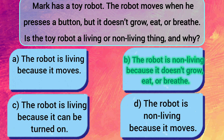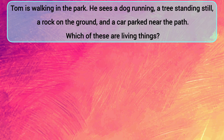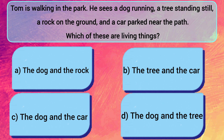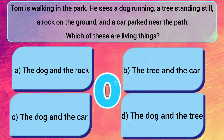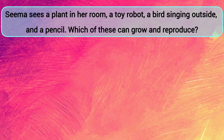Tom is walking in the park. He sees a dog running, a tree standing still, a rock on the ground, and a car parked near the path. Which of these are living things? A: The dog and the rock. B: The tree and the car. C: The dog and the car. D: The dog and the tree. The answer is D — the dog and the tree.